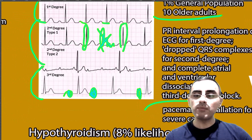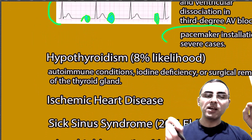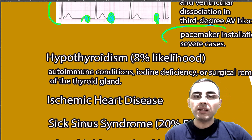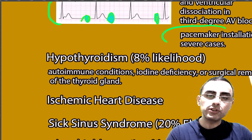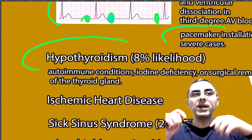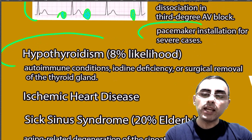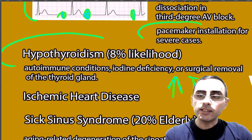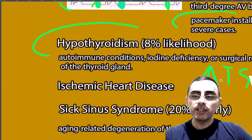Treatment of severe atrioventricular block is pacemaker installation. Hypothyroidism also causes bradycardia because the body's metabolism decreases and slows down. Hypothyroidism means a lack of thyroid hormone — we see increased TSH and decreased thyroid hormones such as FT3 and FT4. Levothyroxine is the treatment in this case.